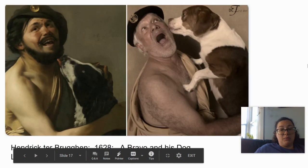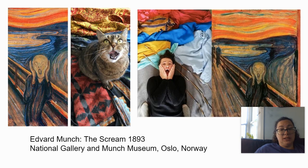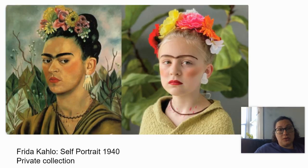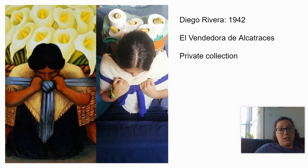We've got a Bravo and his dog, Claude Monet, and The Scream. You'll notice that we created a version of this several years ago — it's in the front hall of Hester Junior High. We've got Frida Kahlo, Frida Kahlo, and Diego Rivera.